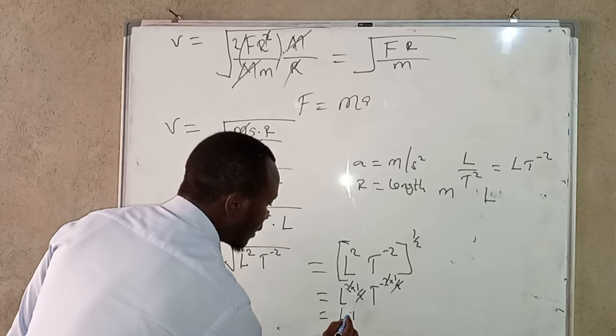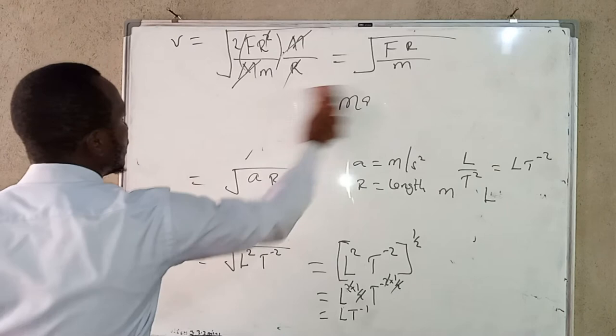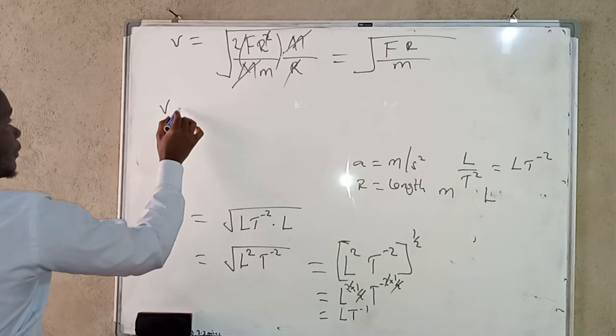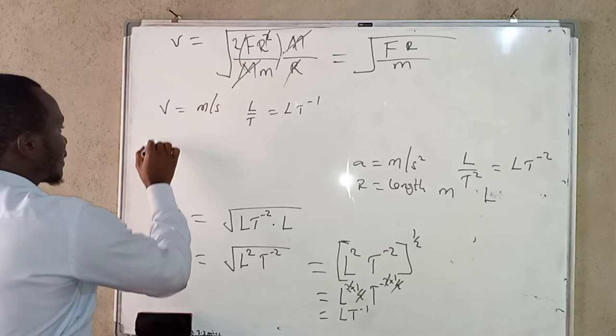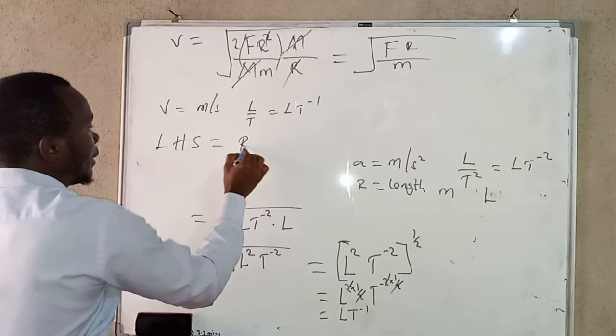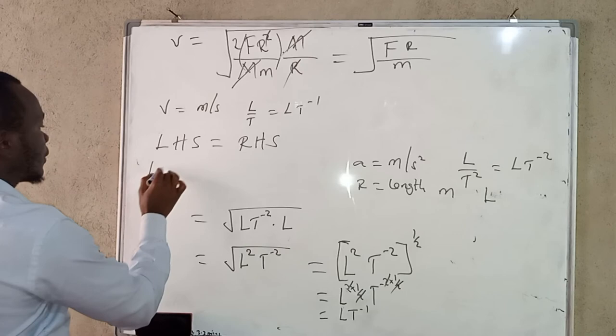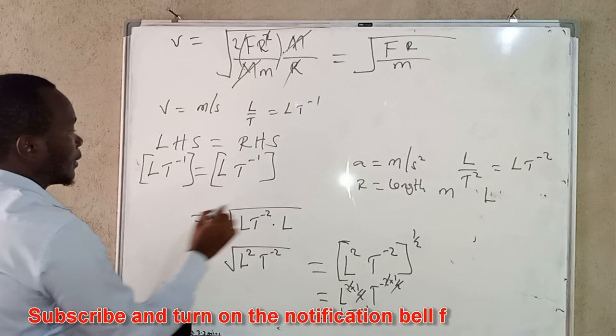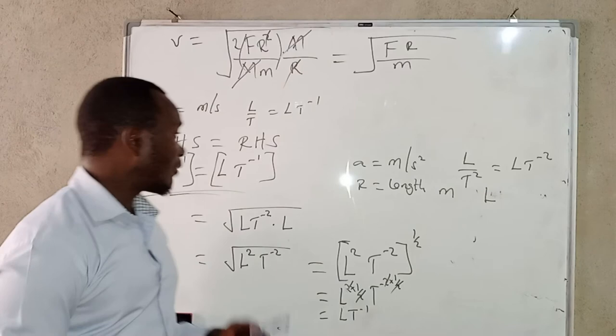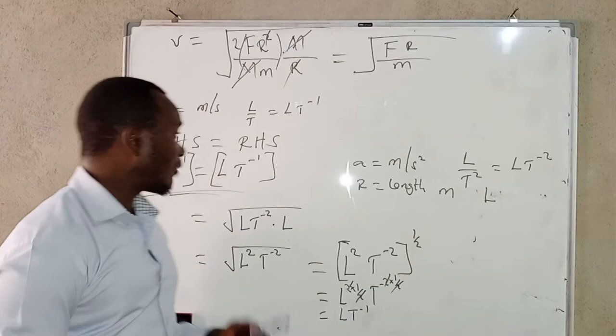What we have is L T to the power negative one. The dimensions for velocity on the left-hand side are L over T, which is LT⁻¹. From the right-hand side, what we found was also LT to the power negative one. Since the left-hand side and the right-hand side have the same dimensions, it means the equation for escape velocity is dimensionally consistent.